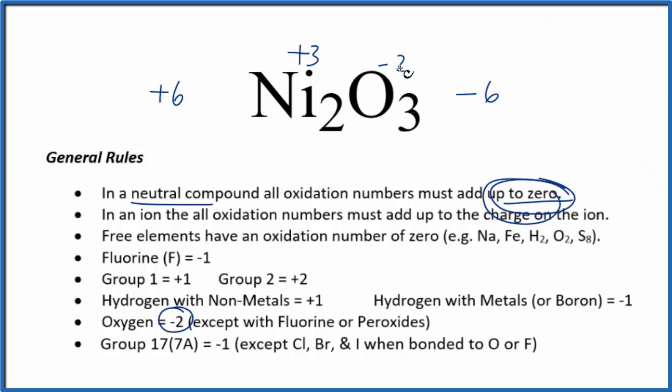Three times -2 is -6. Two times positive 3 is +6, which adds up to zero. This is Dr. B with the oxidation numbers in nickel (III) oxide, Ni2O3. Thanks for watching.